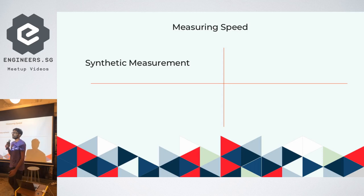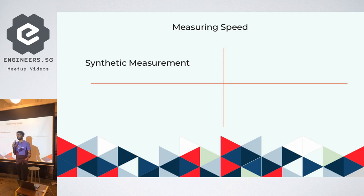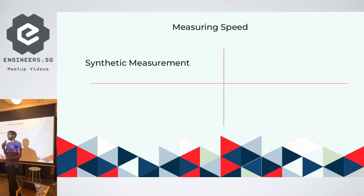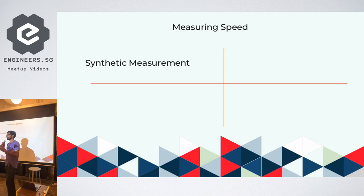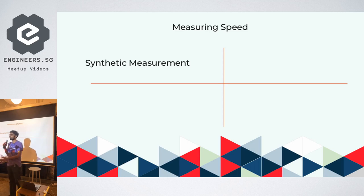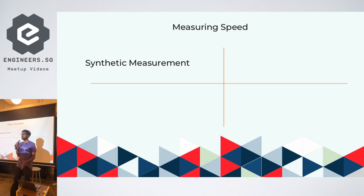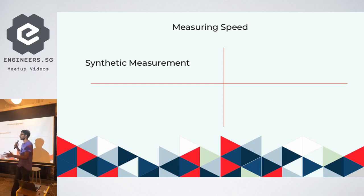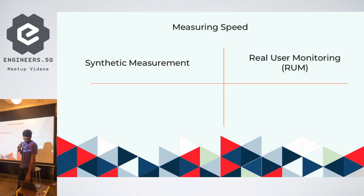Traditionally there are two types of measurements you can do on your website. The first is synthetic measurement, where you test the performance of your website by loading it in a controlled environment — say from a data center — where you can control factors like a simulated 3G connection or a mobile device. The industry standard tool for this is webpagetest.org.